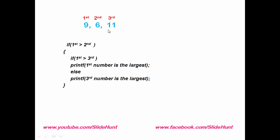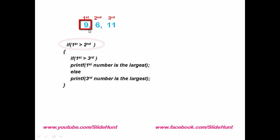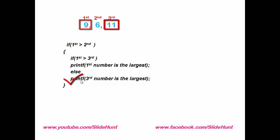Let's compare these three numbers. First we check: is the first number greater than the second? Yes, nine is greater than six. Then we check: is the first number greater than the third? Here we compare nine with eleven — no, this condition is false, so we execute the else statement and the answer is eleven.